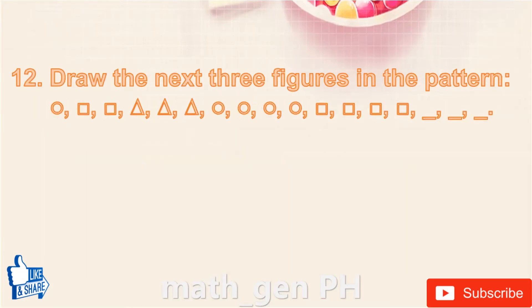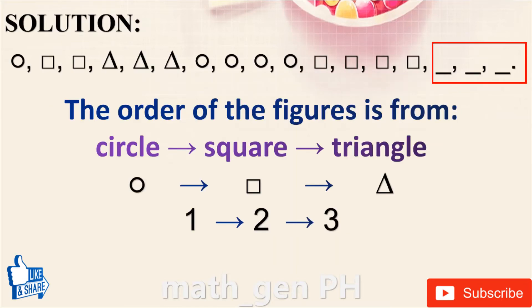Question number 12: draw the next three figures in the pattern. The pattern is: circle, circle, square, square, triangle, triangle, triangle, triangle, triangle, circle, circle, circle, circle, square, square, square, square, square, blank, blank, blank. The order of the figures goes from circle to square to triangle, and the count goes from 1 to 2 to 3 and so on.